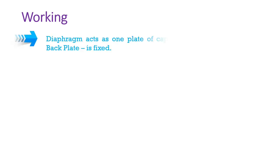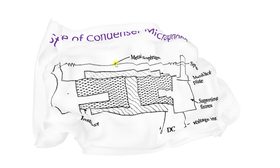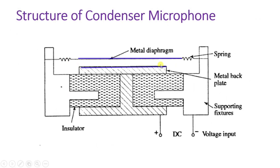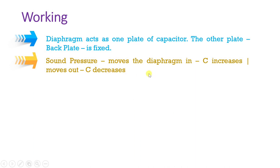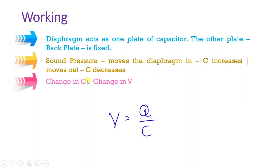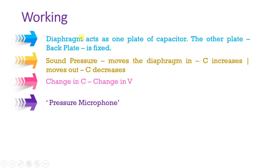Regarding the working: the diaphragm acts as one plate of the capacitor, and the back plate is the second plate. Sound pressure moves the diaphragm inward; as the diaphragm moves in, distance D decreases, and as D decreases, C increases — since C = ε₀εᵣA/D. This change in capacitance changes the voltage, as V = Q/C. The complete structure functions based on the pressure of sound, so this is a pressure microphone.